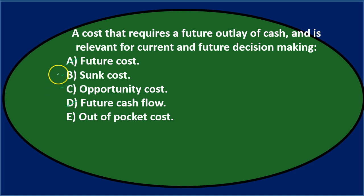Thinking about those three costs: sunk cost is something that happened in the past that we can't do anything about — this question asks about a future outlay, so it can't be sunk cost. Opportunity cost is the cost of the decision we gave up, the road not chosen — that doesn't fit either. So it has to be out-of-pocket cost. Final answer: E, out-of-pocket cost.